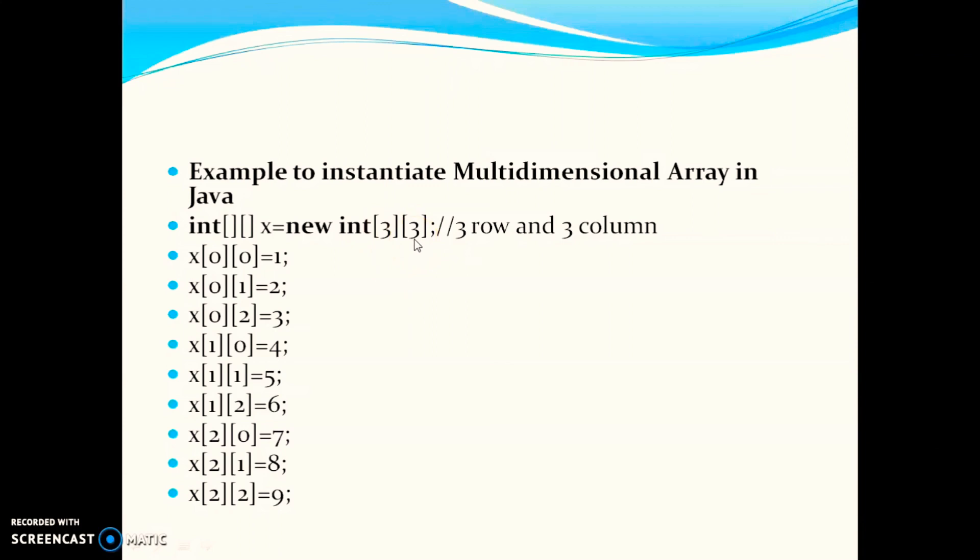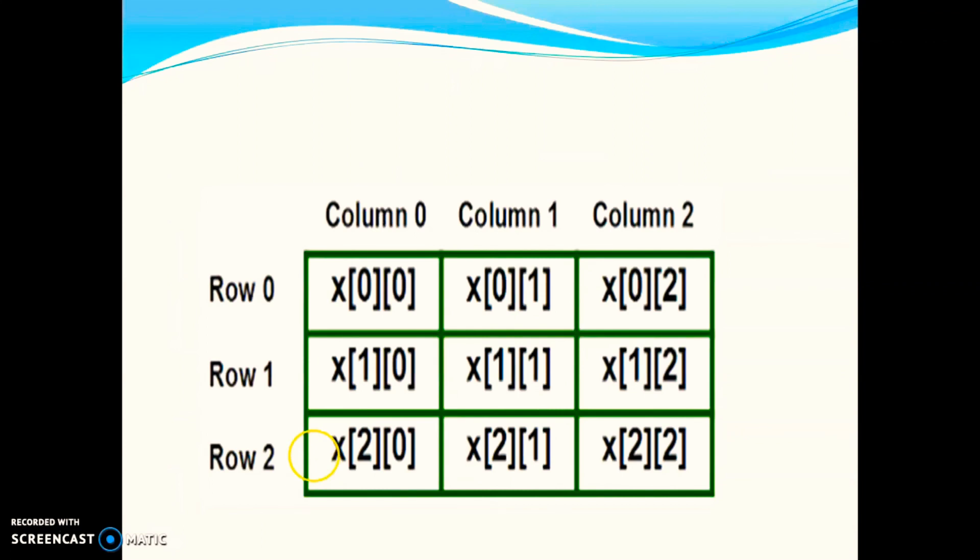Now we will see how the indices will be accessed. The first index is x of 0, 0. This is the first position. x of 0, 1 is the second position. We are assigning values to the different memory locations. This is how various indices of a matrix are accessed. The matrix form can be represented as row 0, row 1, row 2, then column 0, column 1, column 2. These are the various positions you can see in this representation.